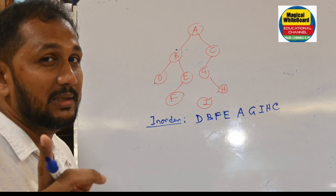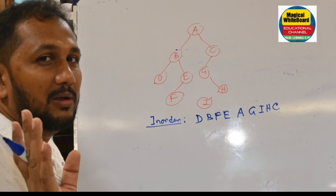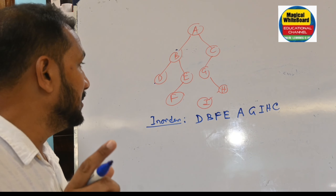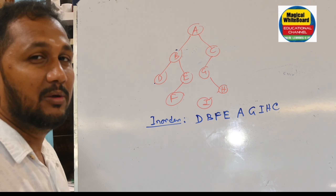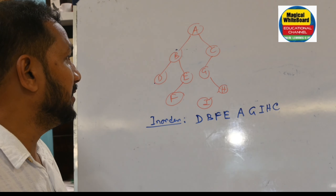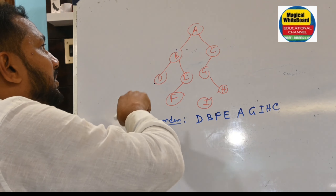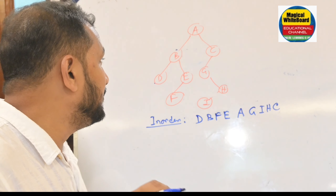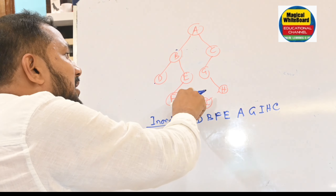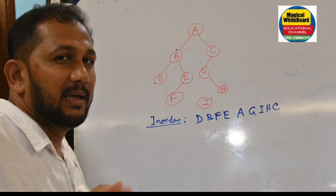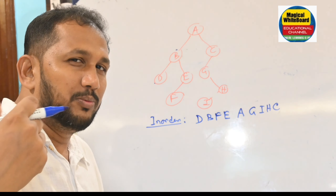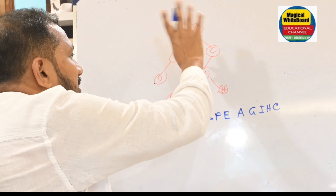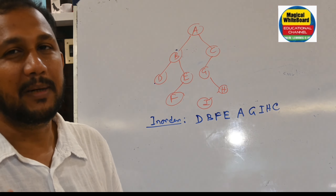To summarize in-order: find the left subtree first, the left node is D, then root B, then the right subtree where left is A (F), root is E, no right. The left subtree is complete, then root A, then from the right subtree there is no left node of G, so root is G, then go right — from the right subtree apply left-root-right again to get I, H. Finally visit root C. The in-order traversal result is: D, B, F, E, A, G, I, H, C.